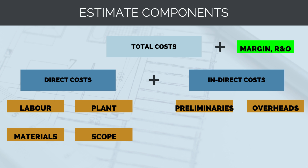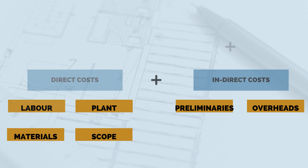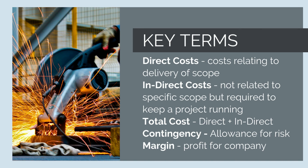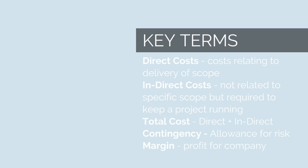We combine direct and indirect costs to get our total project costs. To this, we then add on our contingency — known as our risk and opportunity — and profit margin to get our price to the client. So the key terms are: direct costs (costs relating to delivery of scope), indirect costs (not directly related to a given scope), total cost (a combination of direct and indirect), contingency (allowance for risk), and margin (a percentage we add to our costs to work out the price we provide to the client).